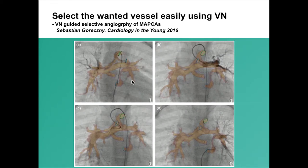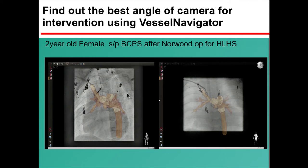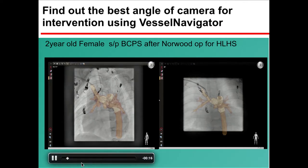This slide is from Dr. Sebastian Greczny — he used the CT image of a patient with pulmonary atresia VSD and multiple MAPCAs. He put the 3D reconstructed MAPCAs image onto the fluoroscopy, then selected all the MAPCAs branches one by one. So we can reduce to one angiogram using this vessel navigator. This vessel navigator is also useful to find out the best camera angle, just like a rotational angiogram and roadmap. We can apply the 3D CT image onto the fluoroscopy and rotate it.